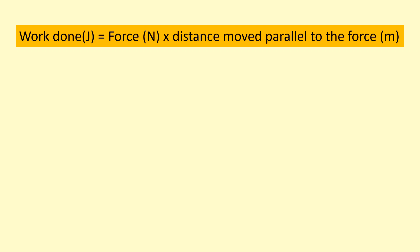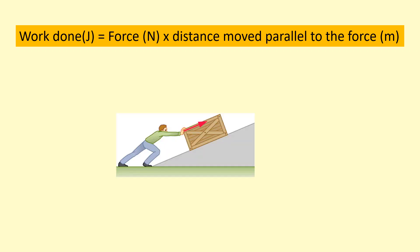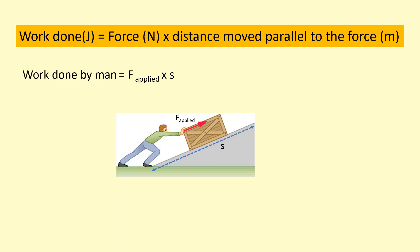We're going to look at how to use a work done formula to find the work done by or against different forces. Imagine a person pushing a box up a slope. If he applies a force F applied and he moves a distance S parallel to the slope, we can say that the work done by the man is the force applied times the distance parallel to the slope.